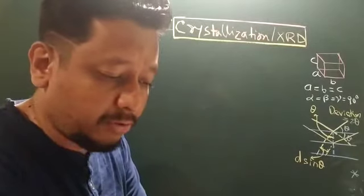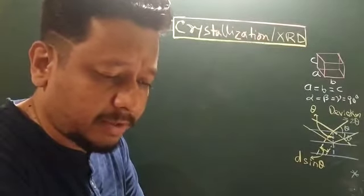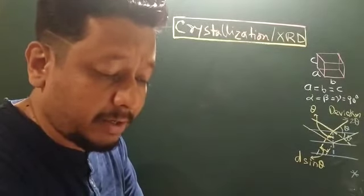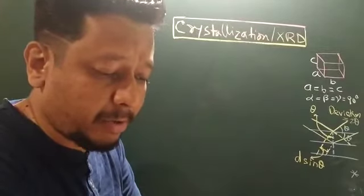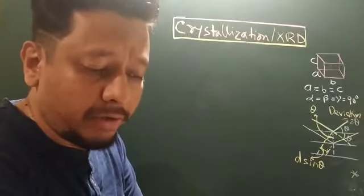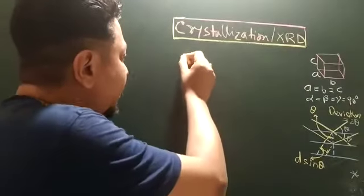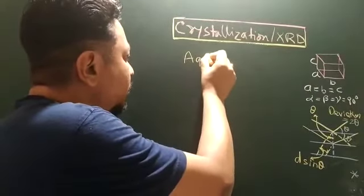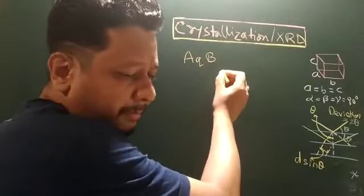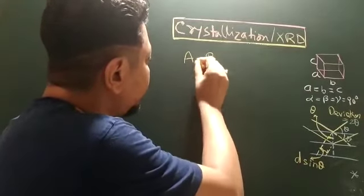So let me read out for you. Solubility equilibrium is a type of dynamic equilibrium that exists when a chemical compound in the solid state is in chemical equilibrium with a solution of that compound. That means I have a component solute P, B, Q